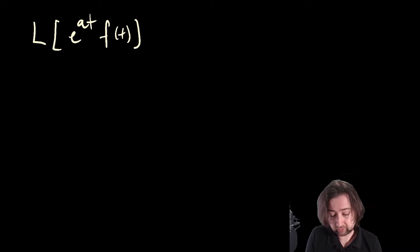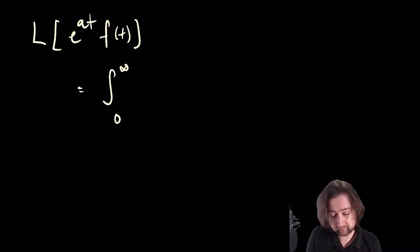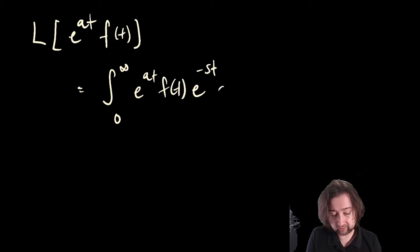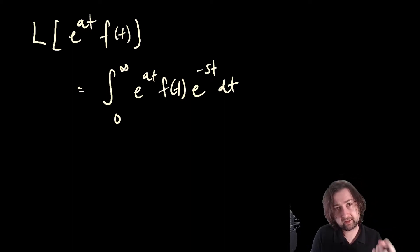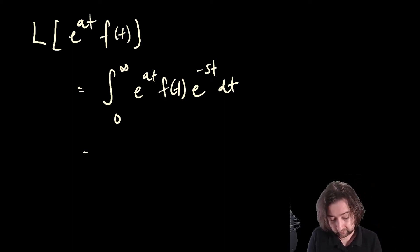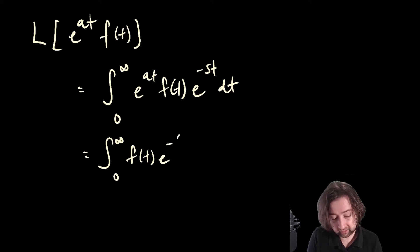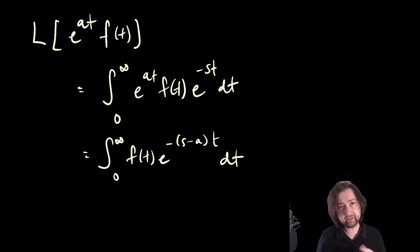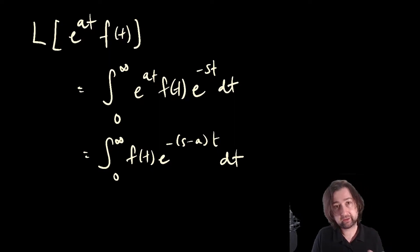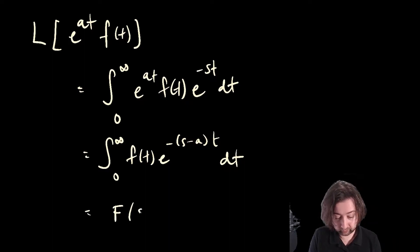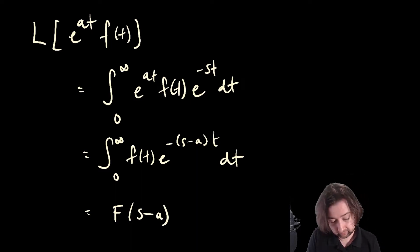If I write down the definition of the Laplace transform, I'm going to get the integral from zero to infinity of e to the at times f of t times e to the minus st dt. Then we can take the two exponentials and combine them together, getting the integral from zero to infinity of f of t times e to the minus (s minus a)t dt. Now this is a Laplace transform, but not in terms of the variable s — it's a Laplace transform in terms of s minus a. This is F, but with s minus a plugged in in place of s.